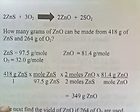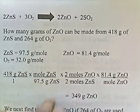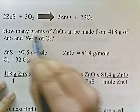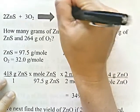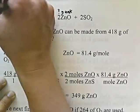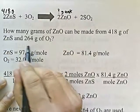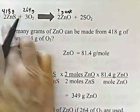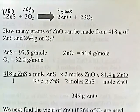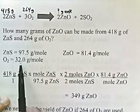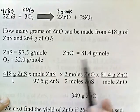How many grams of ZnO can be made from 418 grams of ZnS and 264 grams of O2? Let's identify the knowns and unknowns. How many grams of ZnO is the unknown. Can be made from 418 grams of ZnS and 264 grams of O2 — so we have two knowns and one unknown. ZnS is 97.5 grams per mole, O2 is 32 grams per mole, and ZnO is 81.4 grams per mole.